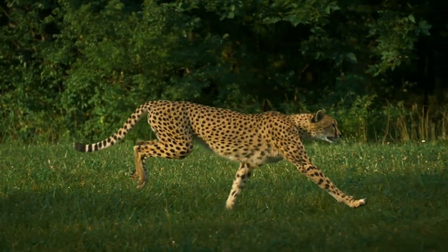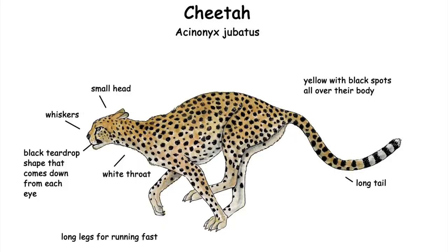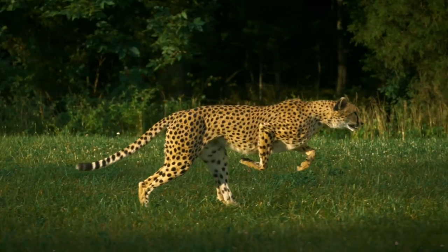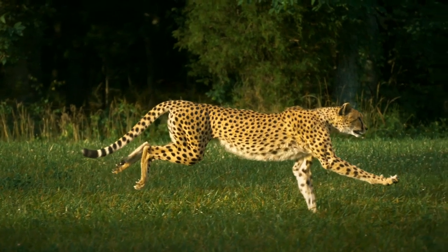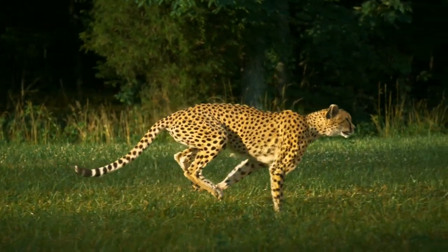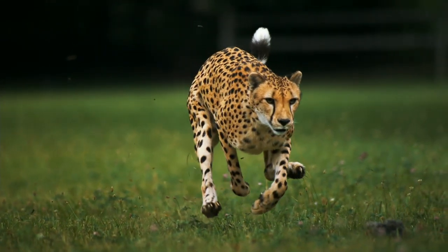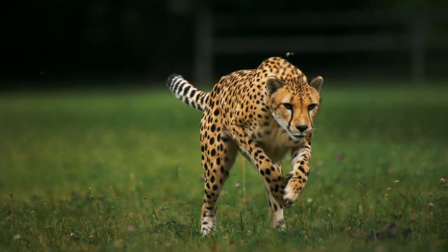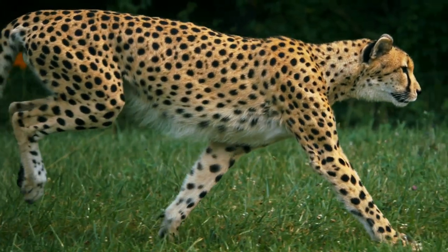Cheetahs have a bigger heart, a larger liver, adrenal glands, bronchi and lungs, and huge arteries — characteristics required for an animal that relies on rapid speed to acquire prey. Their physiques are especially suited to running at high speeds, from their long, thin limbs and hard foot pads to the flexible spine that allows them to take large strides. Cheetahs are known for their tawny coats covered in black dots, each in a different pattern to enable the animals to distinguish one another. The cheetah's fur ranges from golden yellow to pale orange, enabling it to blend in with the brown grasslands of the savannah while hunting.